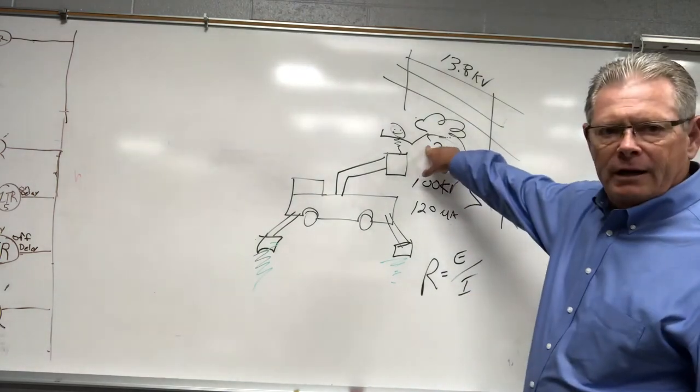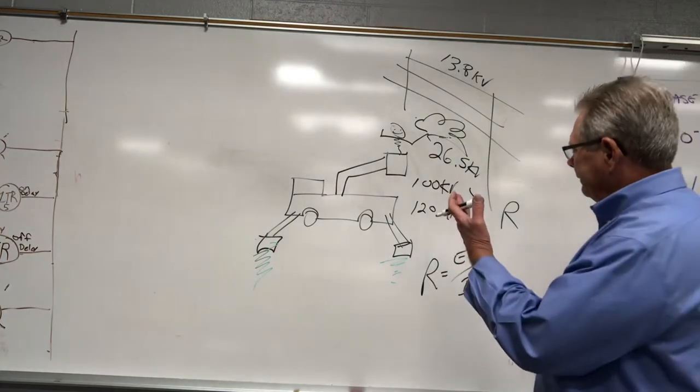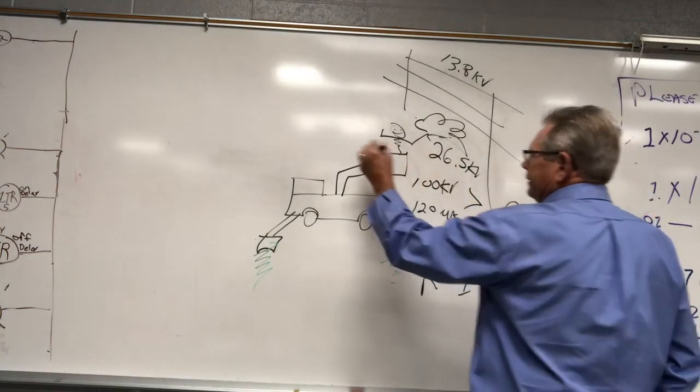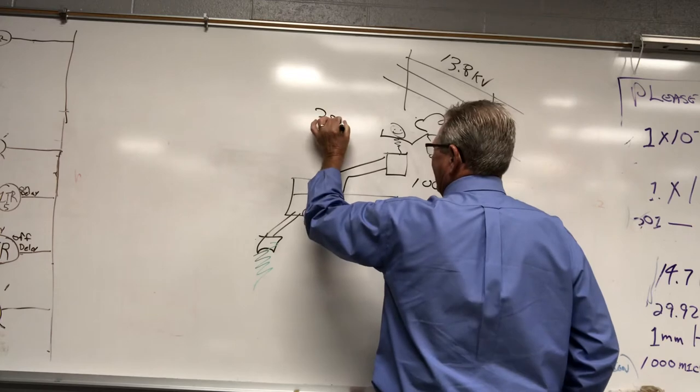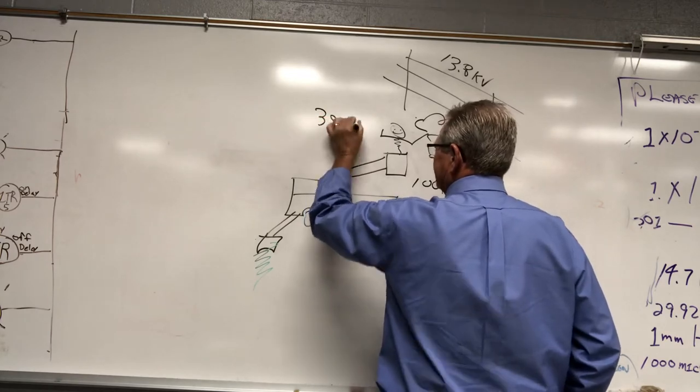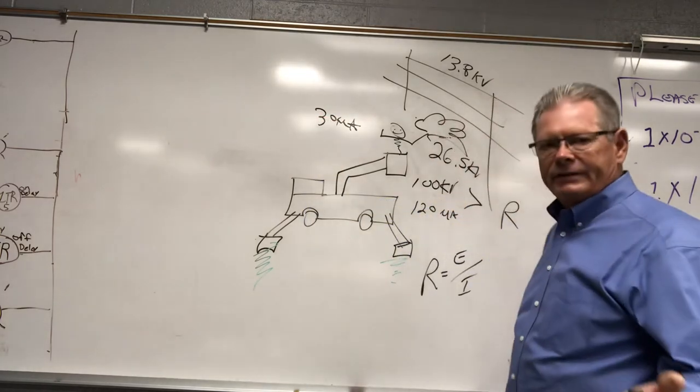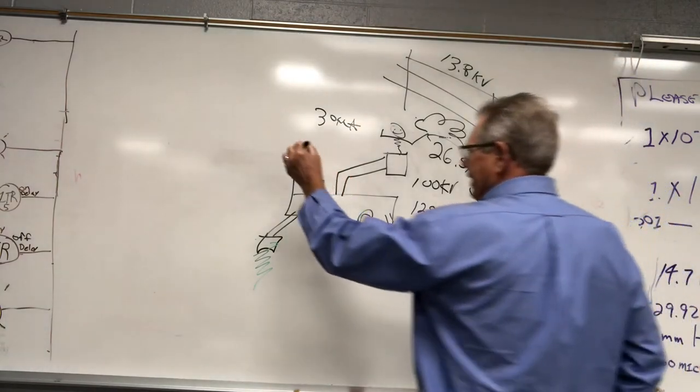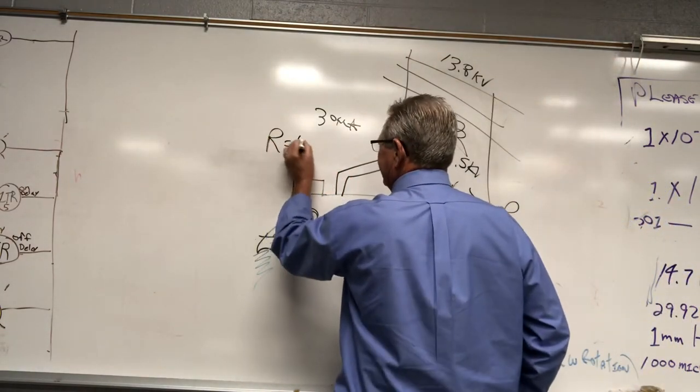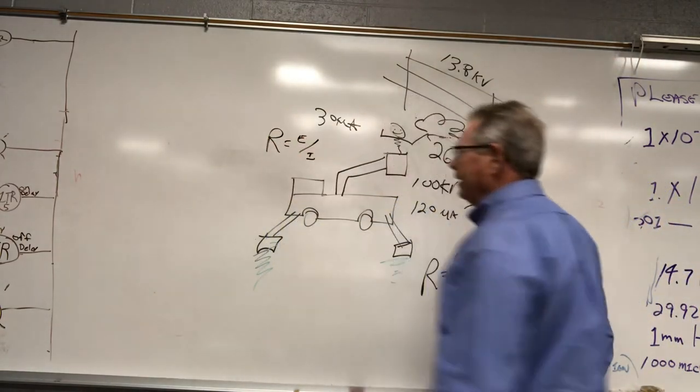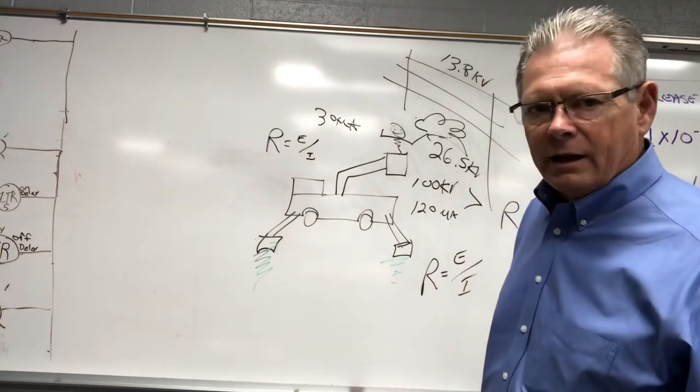Same thing for the glove. If the glove passes 30 microamps at 26,500, same thing. Resistance equals E voltage divided by current, and we get a resistance for the glove.